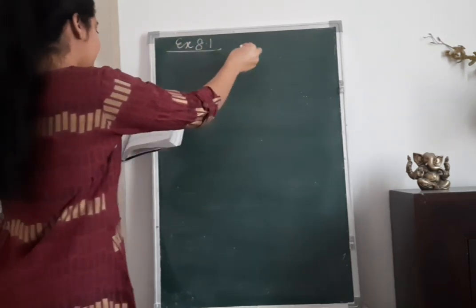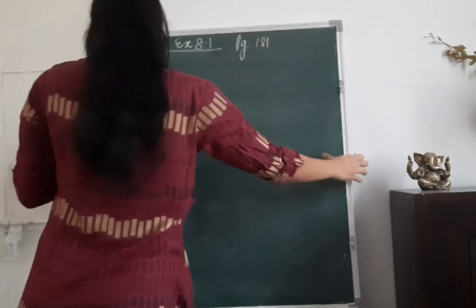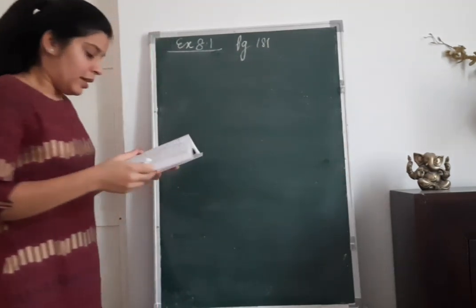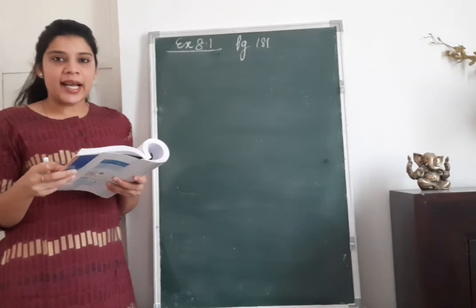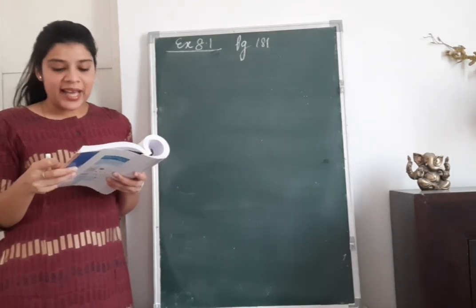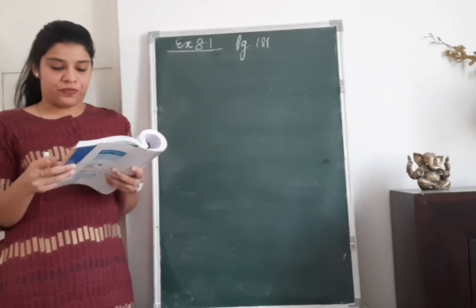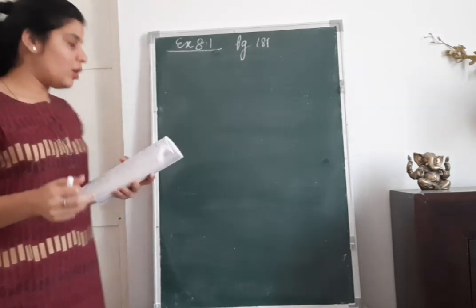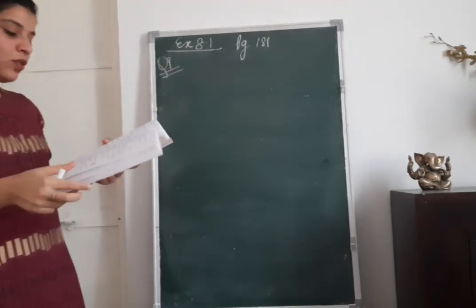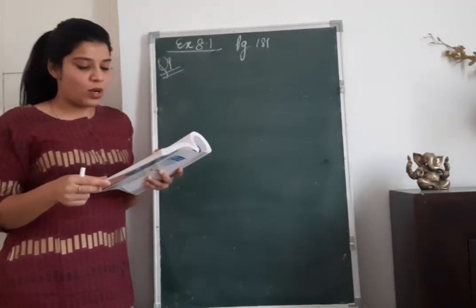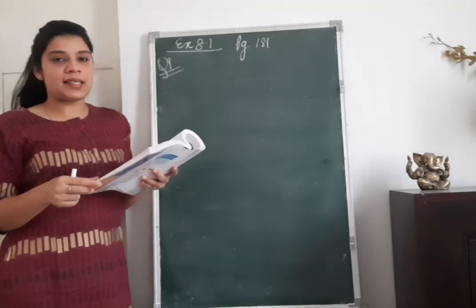Exercise 8.1, page 181. In triangle ABC, right angle at B, if tan A is equal to 1 by root 3, find the value of: sin A cos C plus cos A sin C, and the second is cos A cos C minus sin A sin C.